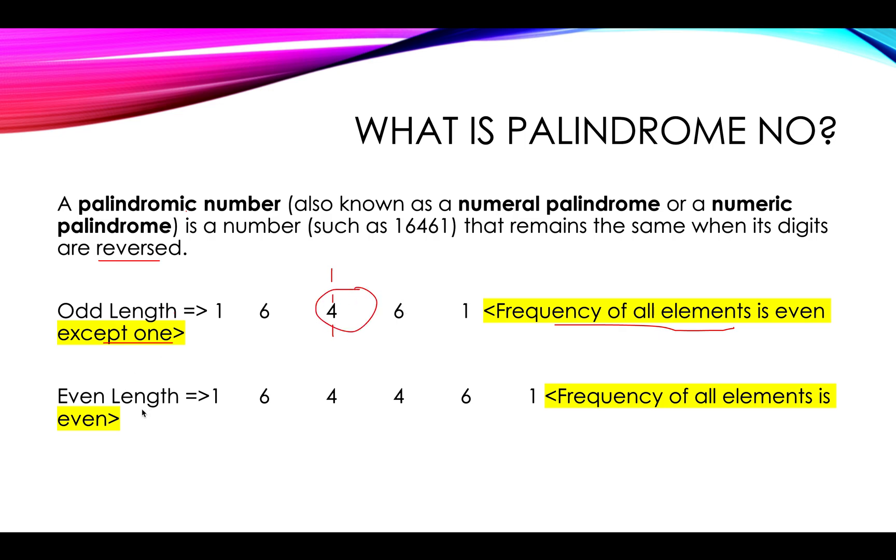Now let's take an example for the even length palindromic number: 164461. Again, if you reverse the number like this you will get this number again, and it is a mirror reflection by the middle of it, which in this case is somewhere between the midpoint of 4 and 4. Here you will see the frequency of all the elements is even for the even length palindromic number.